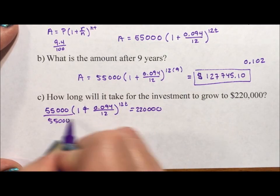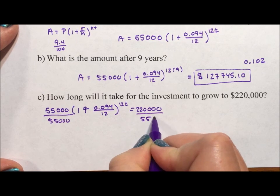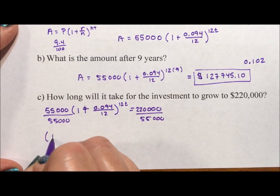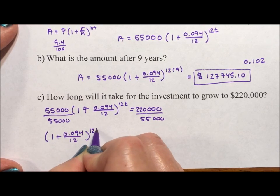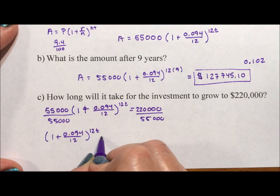I'm going to divide by 55,000. So I'm going to get (1 + 0.094/12)^(12t) is equal to 4.